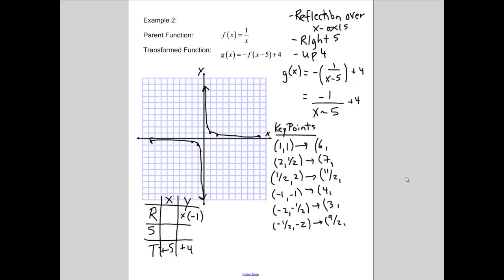All of our y-values, we're turning negative, or multiplying by -1, and then adding 4. So, 1 turns into -1 + 4 is 3. 1/2 times negative is -1/2 + 4 is 3 and a half, which is the same as saying 7 over 2. 2 turns into -2 + 4 is positive 2. Didn't change. -1 times -1 is 1, plus 4 is 5. -1/2 times -1 is positive 1/2. Positive 1/2 + 4 is 4 and a half, which is 9 over 2. And last but not least, -2 turns into positive 2 + 4 is 6. So, there are our 6 new key points that have mapped to their new transformed location.